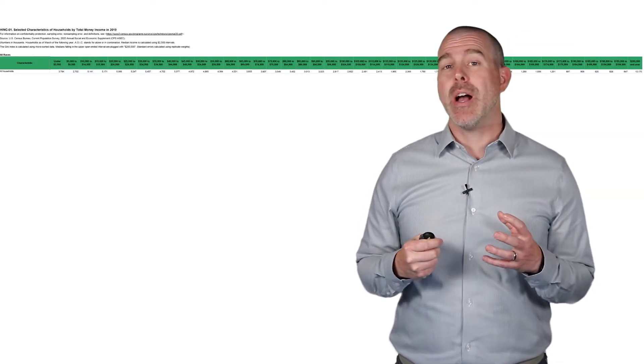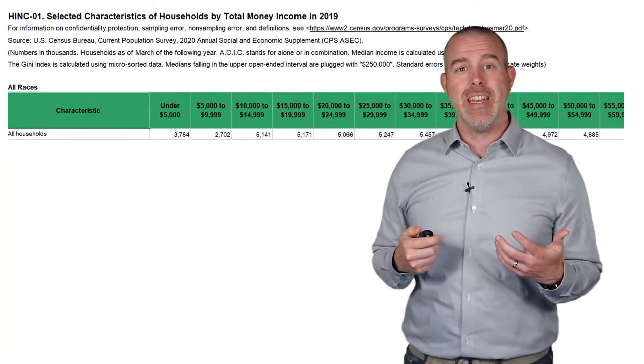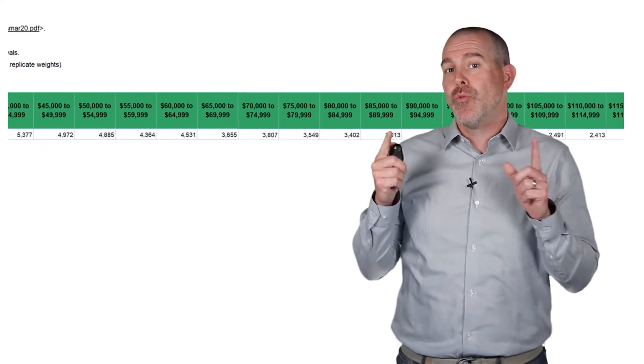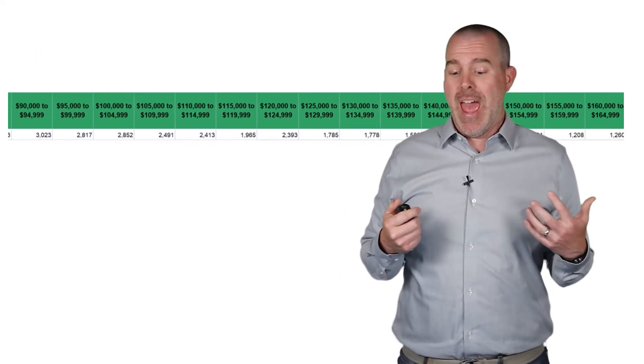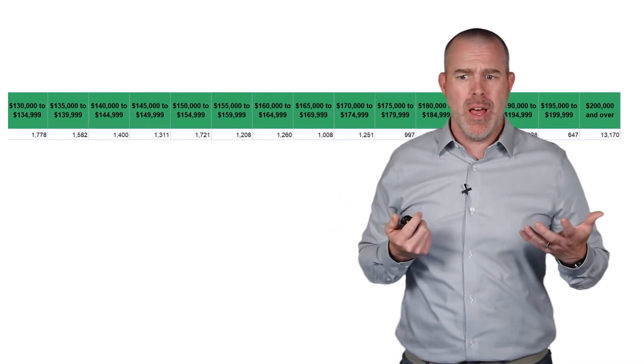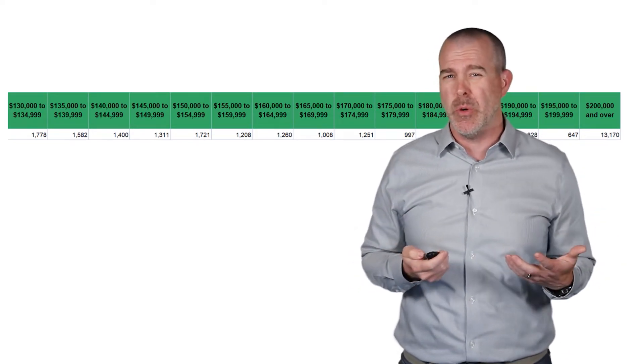Next we're going to talk about what happens when you have data like this. This is income data provided by the U.S. Census but it's all grouped. So what if I want to find the average household income? All I have are these categories. How do I add them all up and divide by how many there are when all I have is groups and then the total within that group?